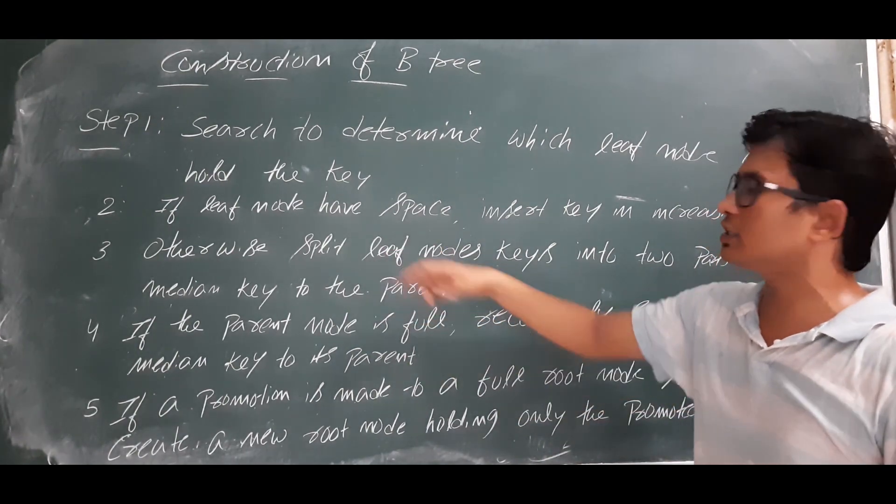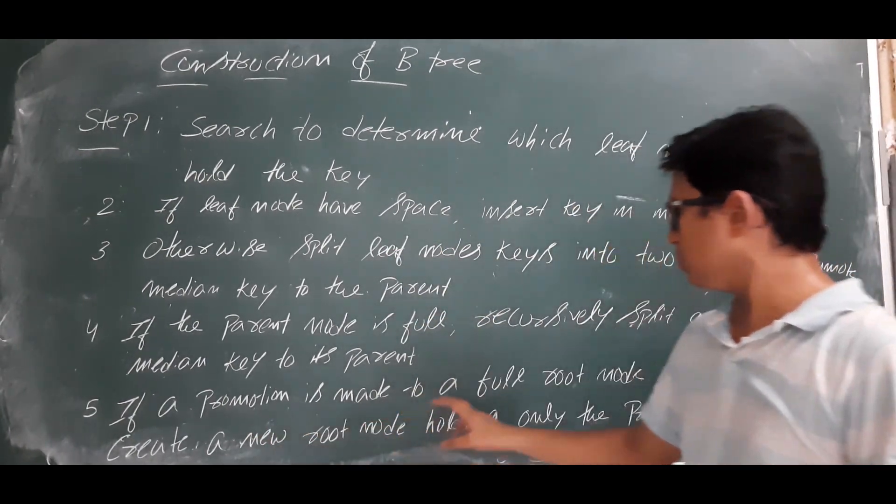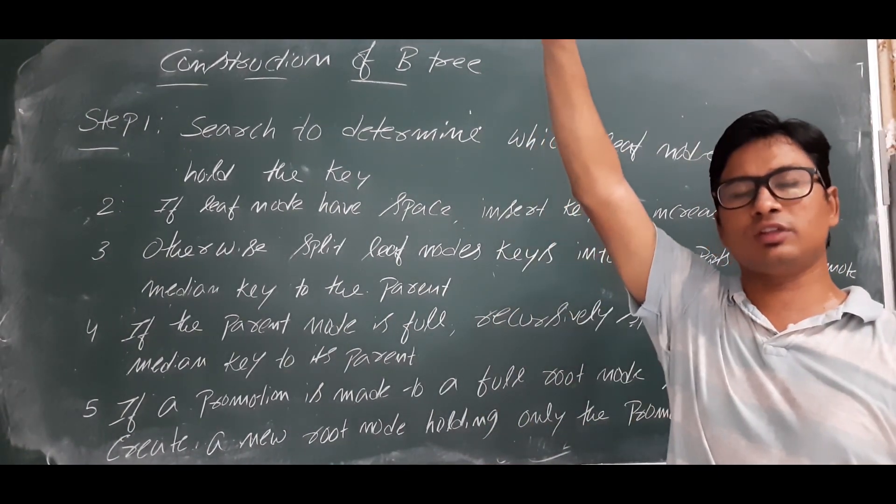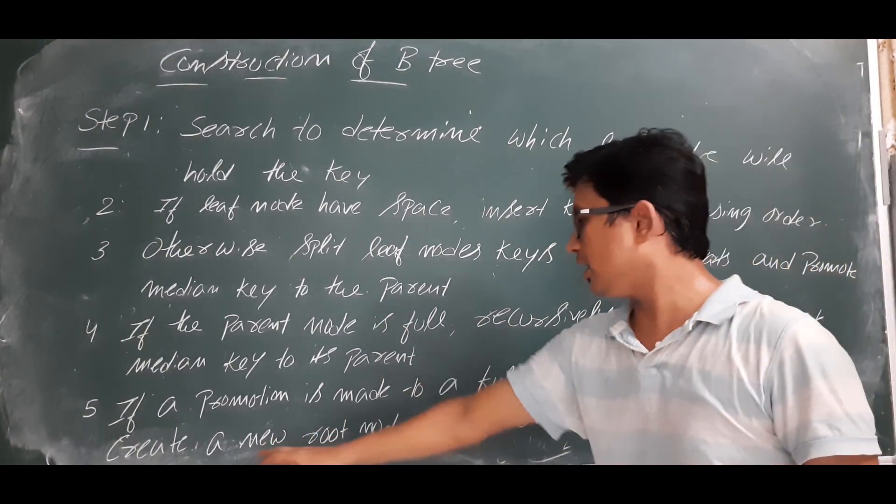Step 5: If a promotion is made to a full root node, split and create a new root node holding only the promoted median key. In that case, even if you have promoted up to the root node and the root node is full, then again you split it and make the new root node.